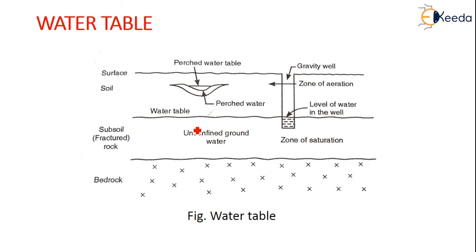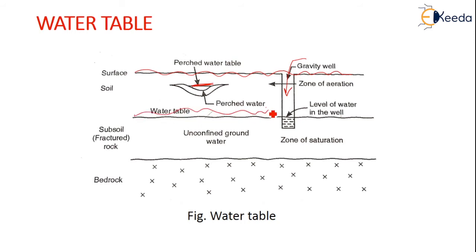This is what the ground table or the water table looks like. Here is the surface. This level of water in the well is a gravity well. This is a perched water table. Below the perched water table there is a level known as the water table. Underneath is the subsurface, also known as fracture rock, with an unconfined groundwater zone of saturation, and below that is the bedrock.